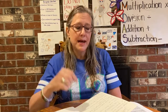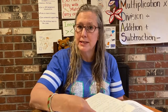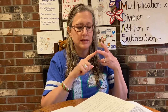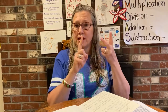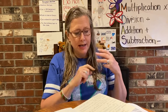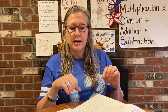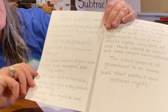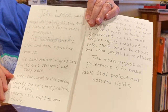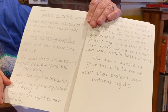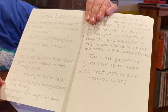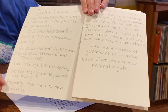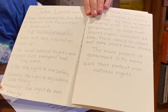Now I'm going to say what he said about each of those things I mentioned — natural rights, the state of nature, and the purpose of government. What did he say natural rights were? Life, liberty, and property. I gave a really short definition of each: Life — the right to live safely. Liberty — the right to say, believe, and live freely. And property — the right to own things.